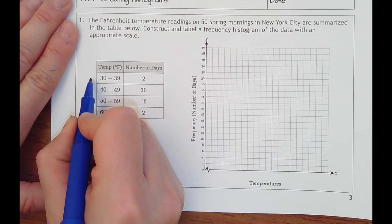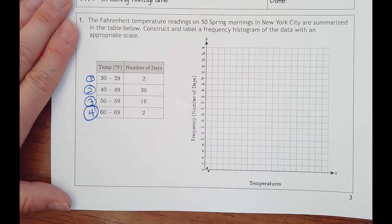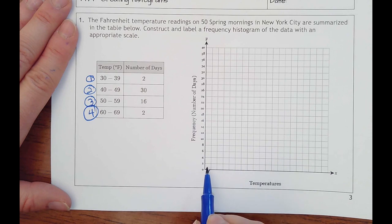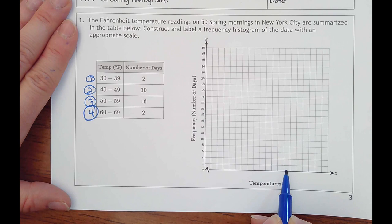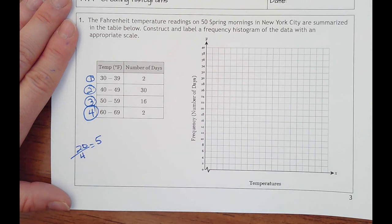Well we're only going to have 1, 2, 3, 4 intervals of data here. And I've got this whole graph. So let's count how many boxes there are going across. 1, 2, 3, 4, 5, 6, 7, 8, 9, 10, 11, 12, 13, 14, 15, 16, 17, 18, 19, 20. So if I have 20 divided by 4 that's going to be five boxes wide.